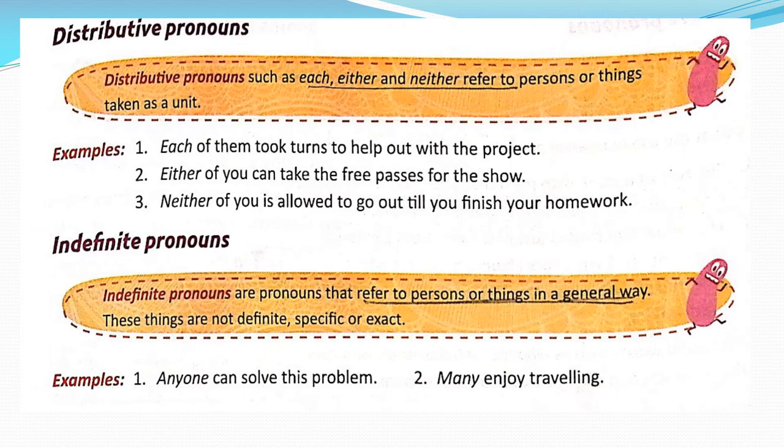Distributive pronouns consider members of a group separately rather than collectively. They include either, neither, each, everyone, any, none, no one, etc. A distributive pronoun is a pronoun which denotes persons or things of a group separately.